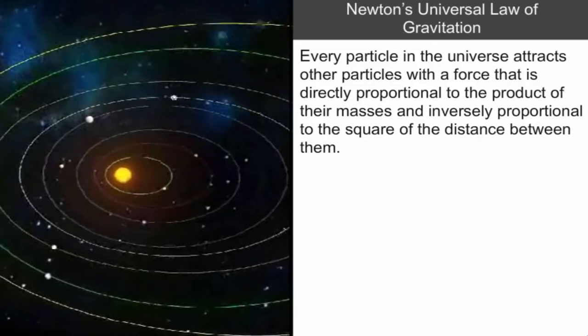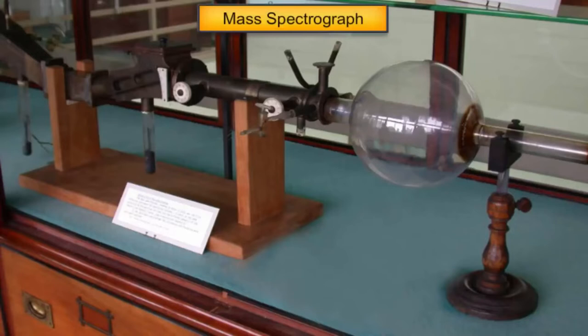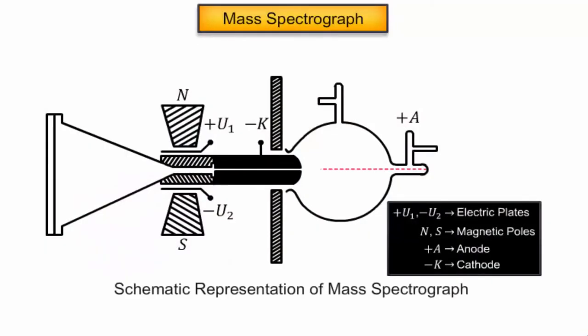Mass of subatomic particles like electrons can be found by making use of devices like mass spectrograph. In a mass spectrograph, a stream of charged particles like electrons in rectilinear motion is subjected to electric and magnetic fields. Due to the effect of the fields, the particles then follow a curved path. Then the radius of the curved path of the particles, which is dependent on the mass of the particle, is observed. From the radius of the particle, the mass of the particle is estimated.